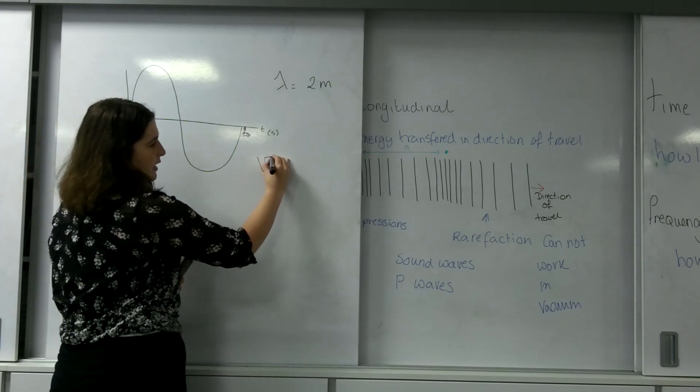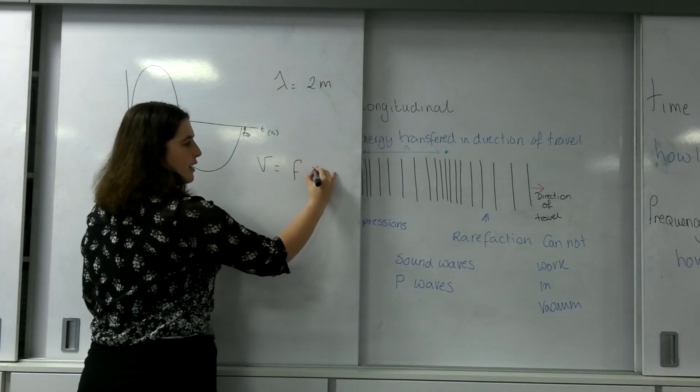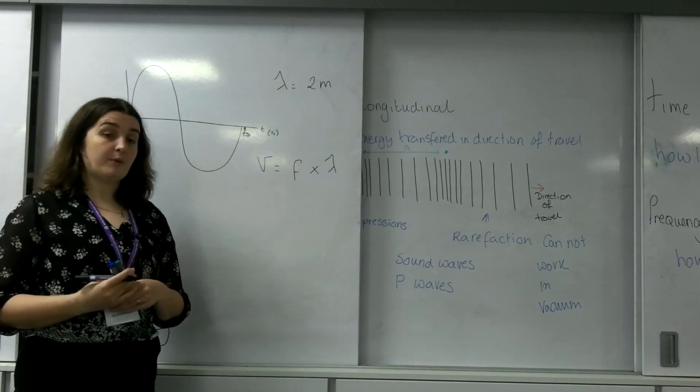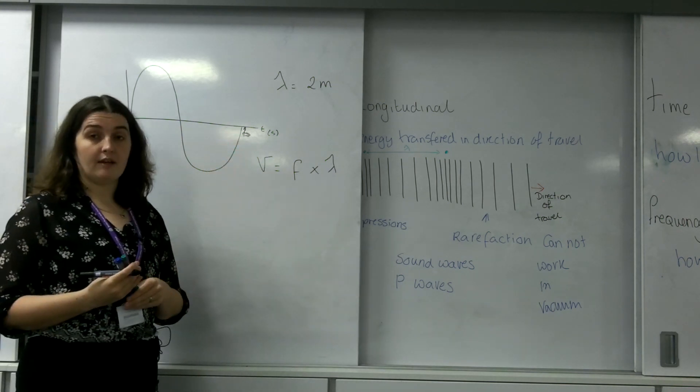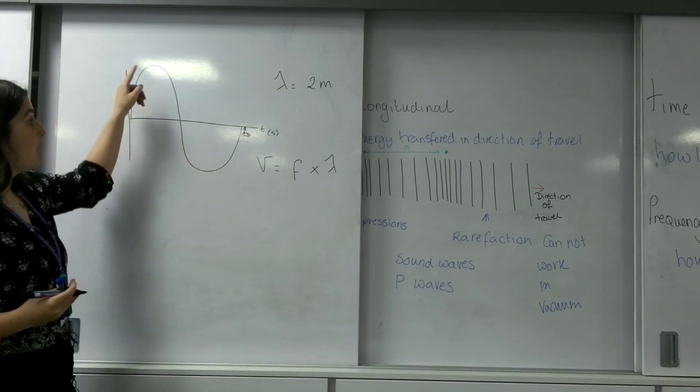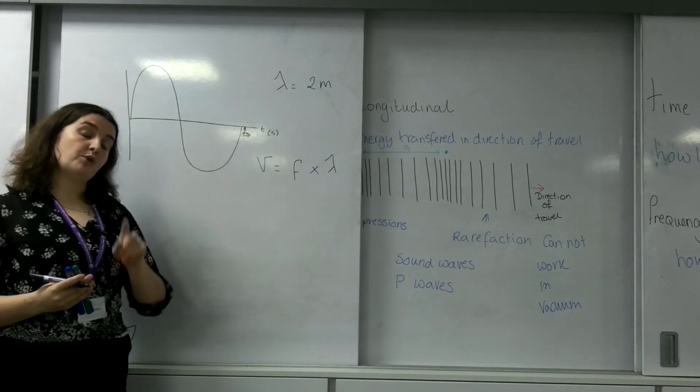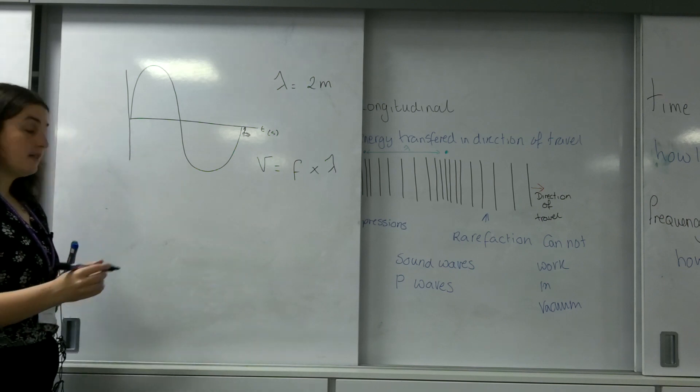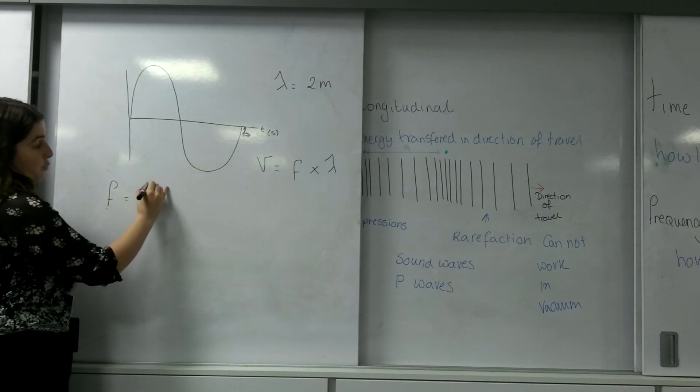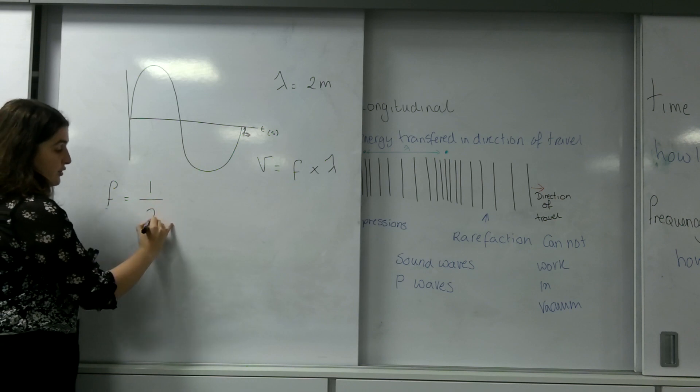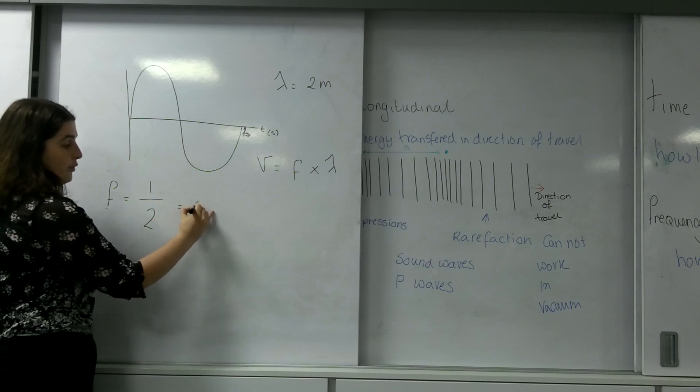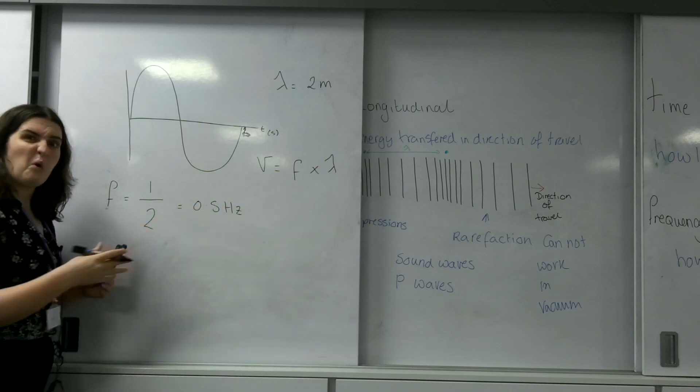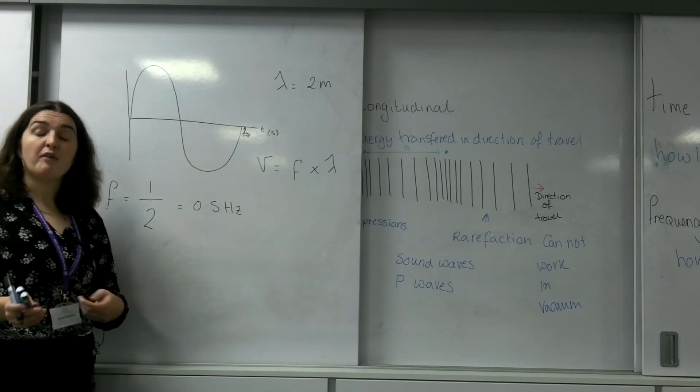So v equals f times lambda. I'm going to need a frequency, and I have been given this graph here. I know the time it takes to do one wave is 2 seconds. This means my frequency is 1 over 2, or 0.5 hertz. In 1 second I'm going to do half a wave.